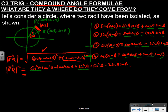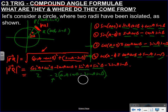Looks complicated, but we can see cos²A plus sin²A, which is 1, and cos²B plus sin²B, which is also 1. So that's 1 plus 1, and we're left with minus 2cosA cosB and minus 2sinA sinB. The 1 plus 1 is 2, and factorizing out the minus 2 gives us: PQ² = 2 minus 2(cosA cosB plus sinA sinB).